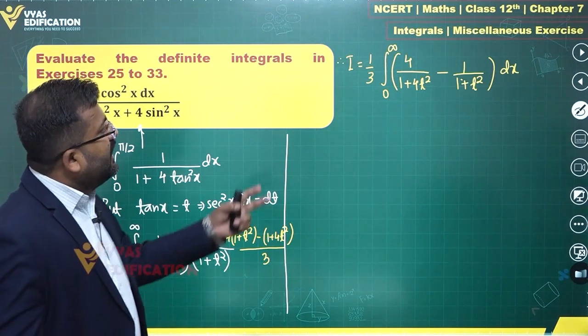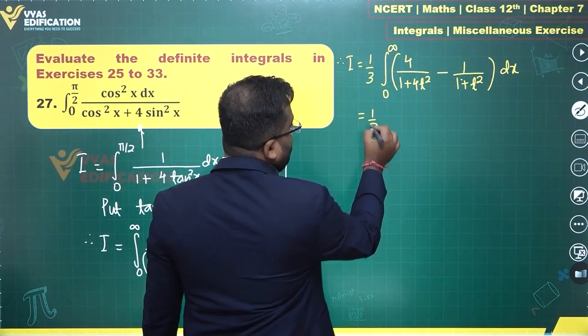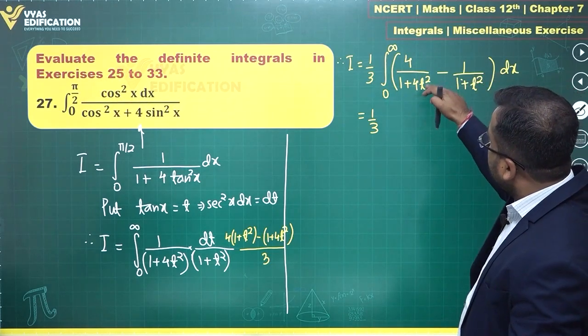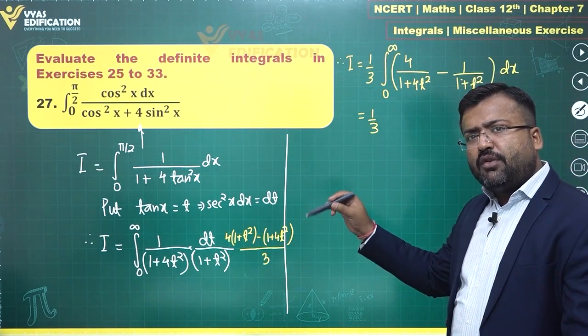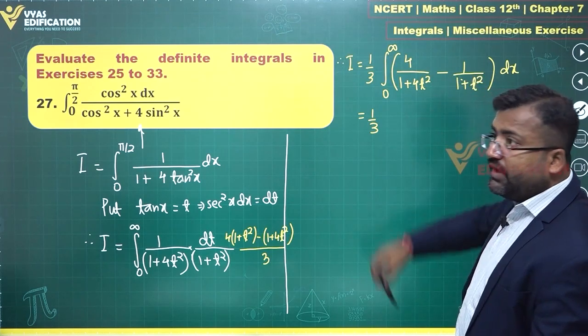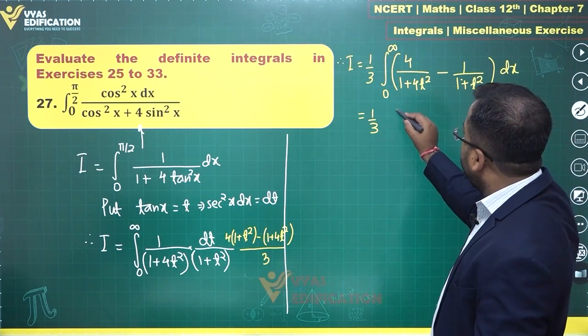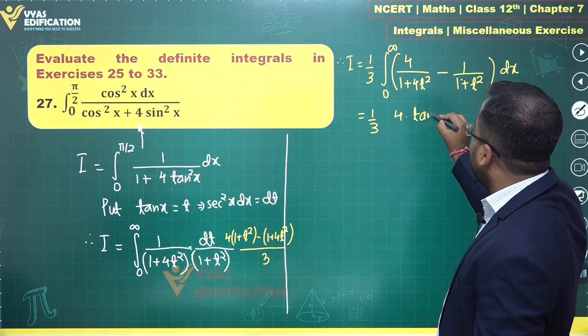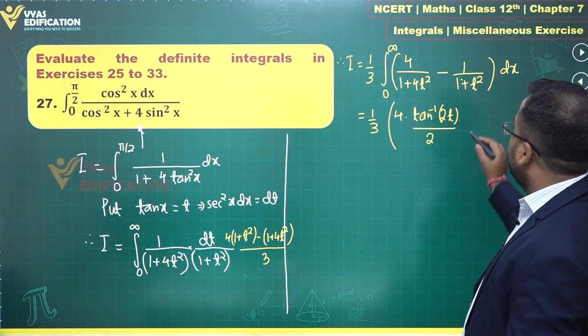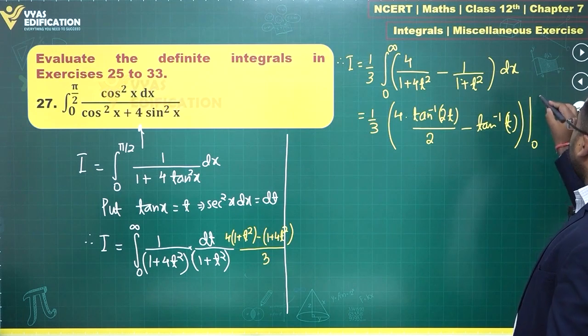Now once you have done this much, then it is time to integrate. This 1/3 is okay. 4 is also okay. This is 1+(2t)². This is a²+x² form or 1+x² form. This will go to tan inverse x. Just that instead of x you have 2x type of a thing, so linear polynomial of x, therefore you will divide by 2. So this 4 remains as it is. What do you get? Tan inverse 2t divided by this 2 in the bracket, minus this is nothing but tan inverse t, which is pretty simple. And now the limits from 0 to infinity. That looks pretty simple.